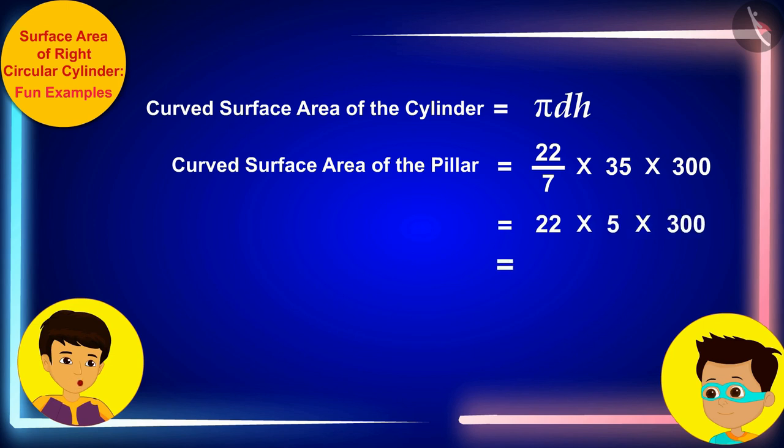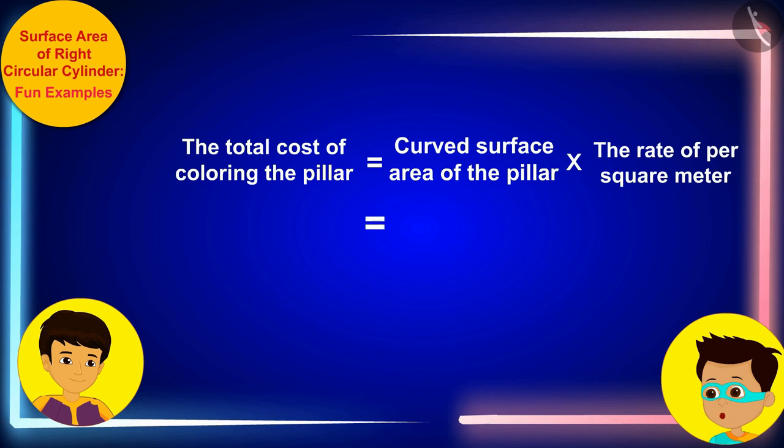On solving in this way, we can see that the curved surface area of the cylinder is 33,000 square centimeters or 33,000 divided by 10,000 that is 3.3 square meters. Yes, Manas. And if we multiply this by per square meter rate of coloring, 200 rupees, in this way, you will find that 660 rupees would be the cost to paint this cylindrical pillar.